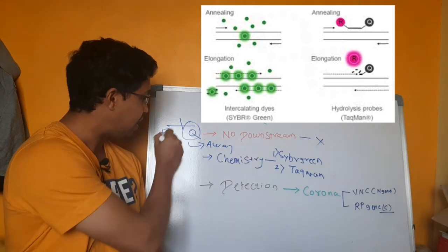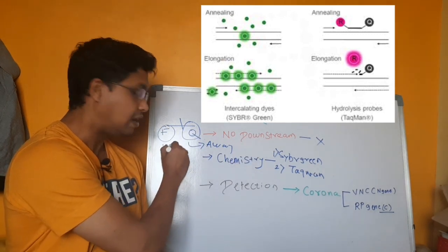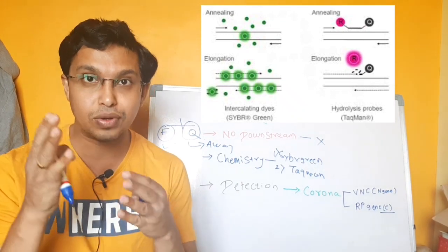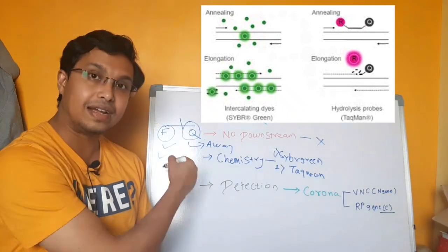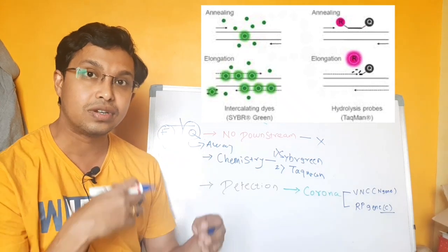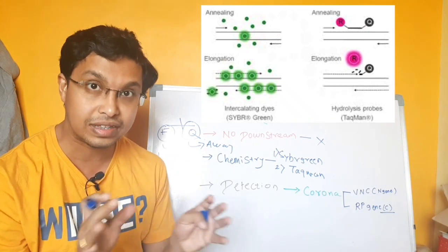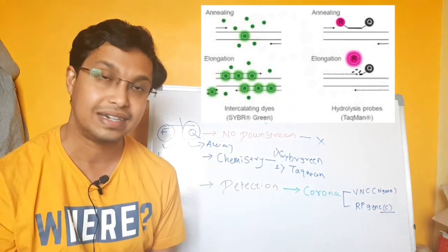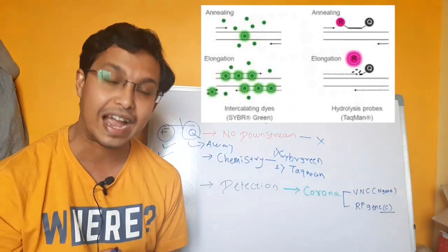As the fluorescence quencher goes away, this will give a fluorescence signal and this signal will be captured. As the cycle progresses, more and more signal will come into picture, going beyond your detection threshold, and it will be detected. Then you will say, okay, my target is present. That is the chemistry behind Taqman probe.